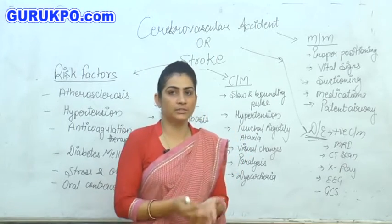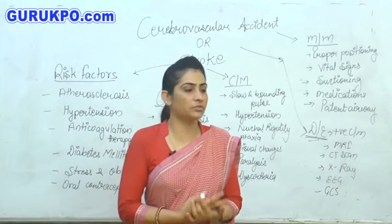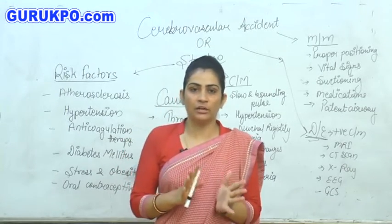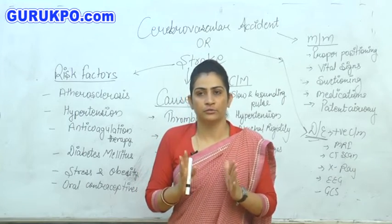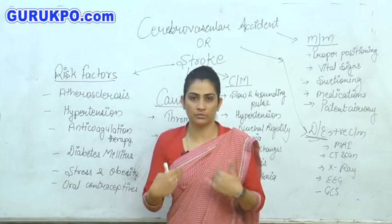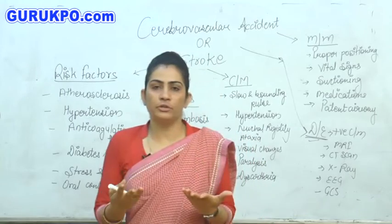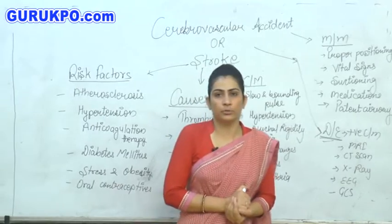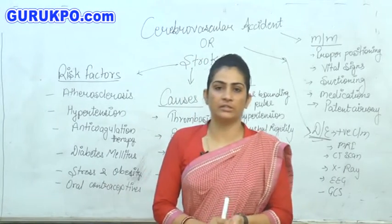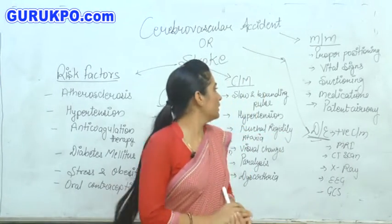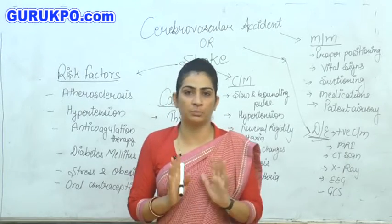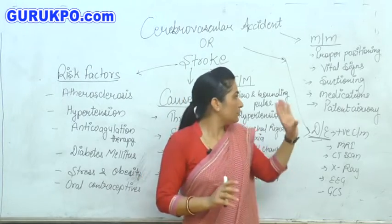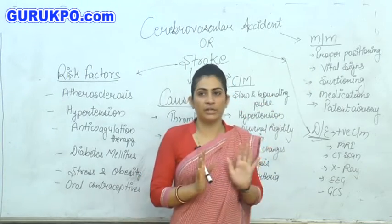Next, how could we manage CVA or stroke? First one is proper positioning — we place the patient on one side with the head elevated, so the patient cannot aspirate fluids or secretions through the throat or nose. Next one is vital signs — proper monitoring of vital signs is also necessary in stroke. Next one is suctioning — if any fluid or secretion is present in the trachea or lungs, we have to suction it properly and in a timely manner.